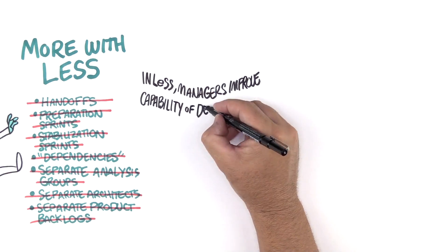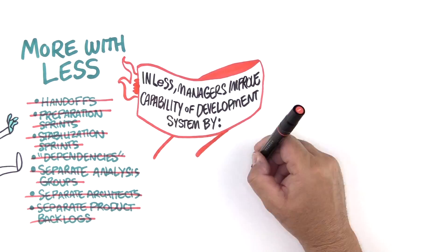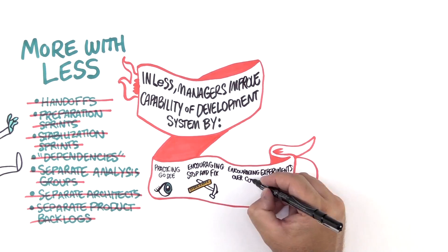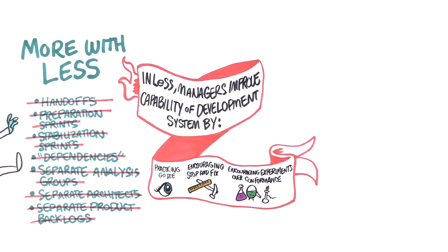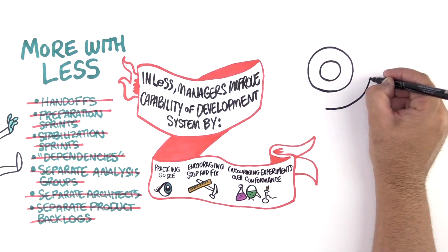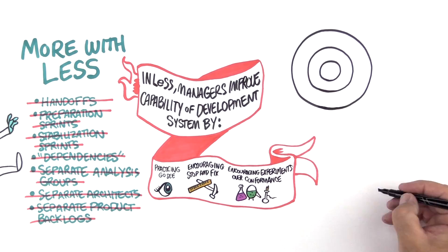In LeSS, Scrum Masters and management help the teams learn. Management shifts focus from direct command to improving the capability of the development system. In our experience, the LeSS framework is the minimum, barely sufficient structure that product groups need to take ownership, gain a whole product view, and optimize organizations for value delivery and flexibility.